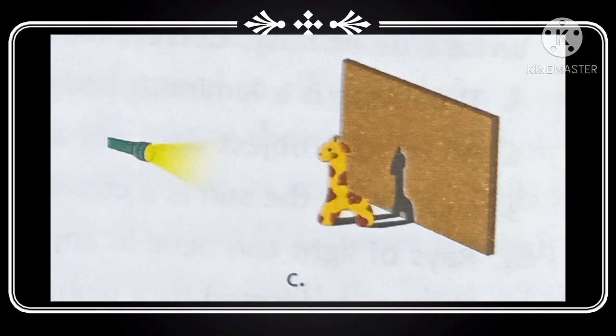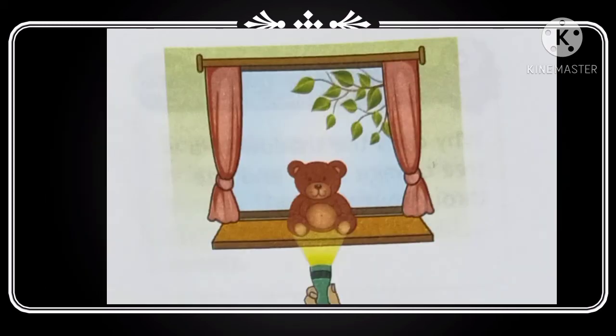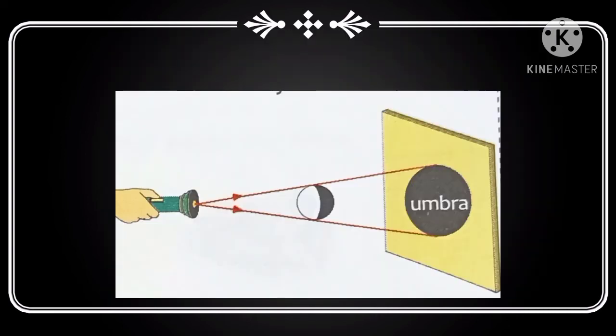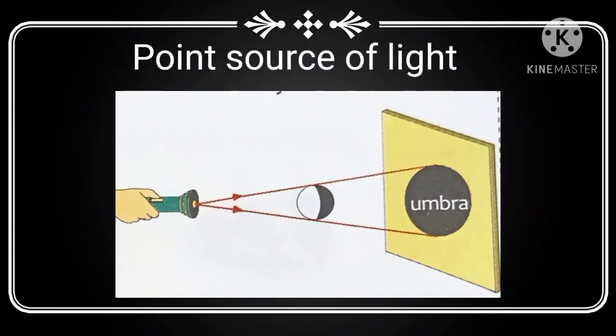When you bring an opaque object closer to the source of light, you will see that the size of the shadow on the screen increases. But when you bring the object closer to the screen, you will see the size of the shadow decreases. A shadow can only be formed on a screen.